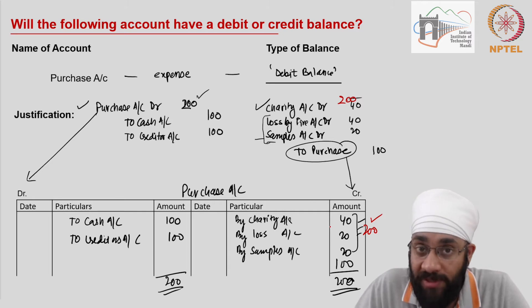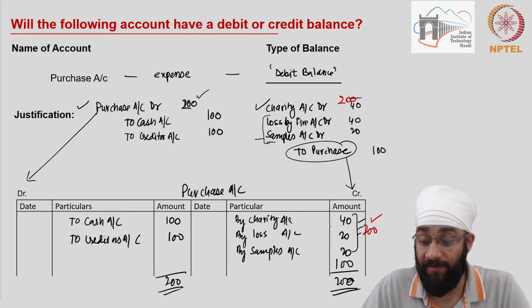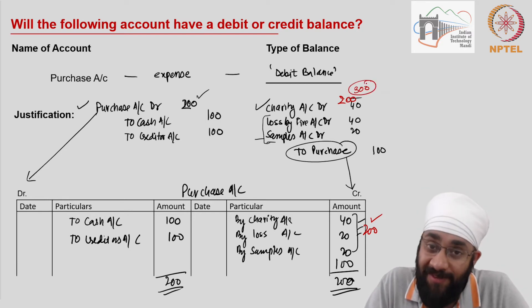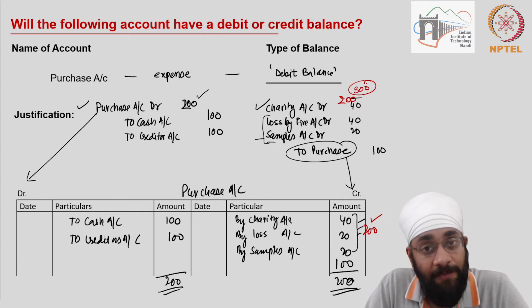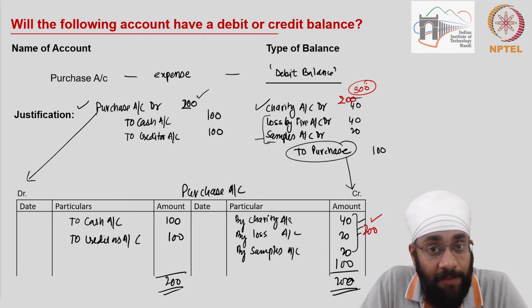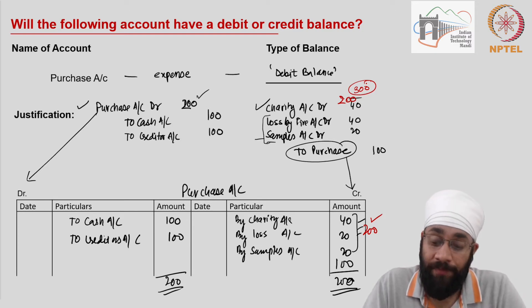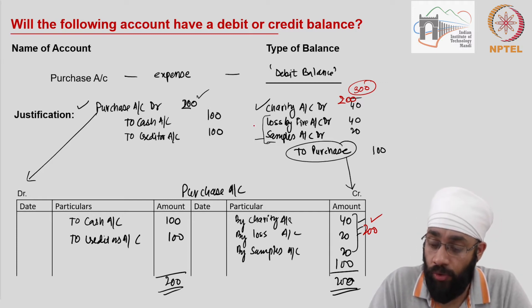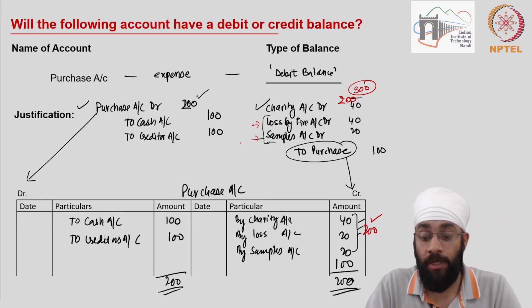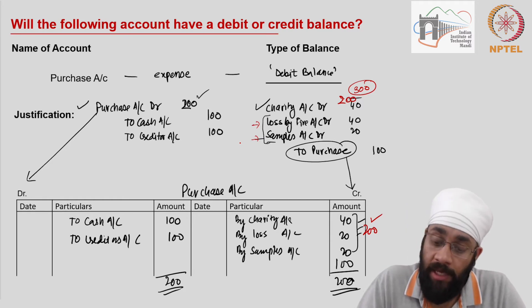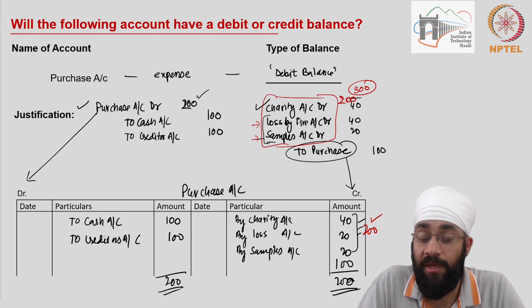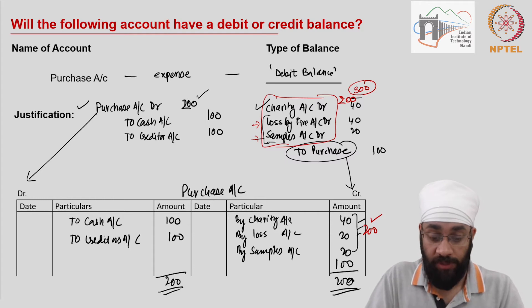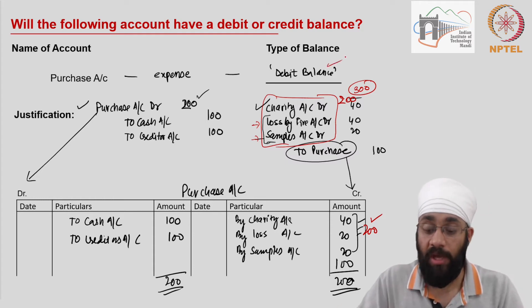You can't give away more goods than you have. You might say we could have sold these goods at 300, but when you sell goods, you enter that in the sales account because income comes in there. In the purchase account you only show the purchase amount of goods given away. Therefore, the purchase account will always have a debit balance.